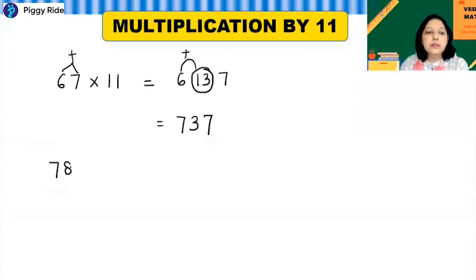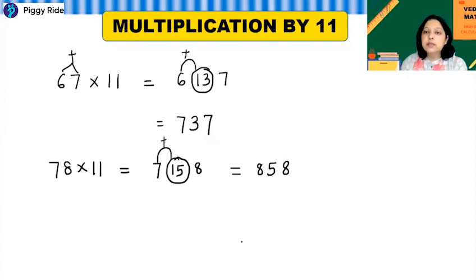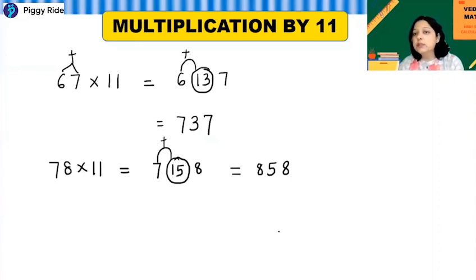Let's try 78 times 11. Write 7 and 8 as they are, and 7 plus 8 is 15. Since 15 is a two-digit number, shift the 1 to the left and add it to 7: 7 plus 1 is 8. So the answer is 858. Whether it's a two-digit or larger result, the rule stays the same — add the tens digit to the left side.